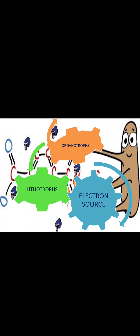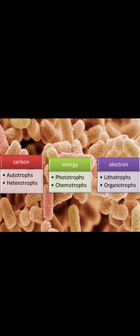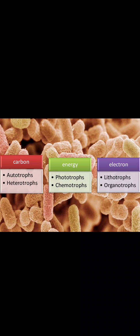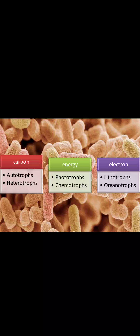Organisms are not restricted to just one parameter — they require carbon, energy, and electrons. So we combine all three parameters for classification. Based on carbon: autotrophs and heterotrophs; based on energy: phototrophs and chemotrophs; based on electron: lithotrophs and organotrophs. Now the full classification starts.